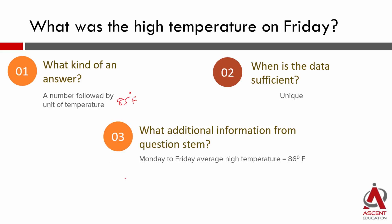The question stem tells us that Monday to Friday, the average high temperature was 86 degrees Fahrenheit. Let's assume the temperature on Monday was M, Tuesday was TU, Wednesday was W, Thursday was TH, and Friday was F.